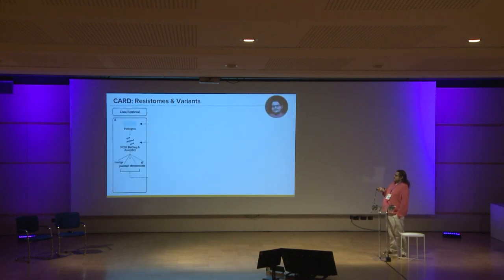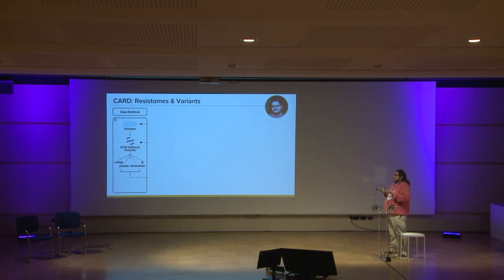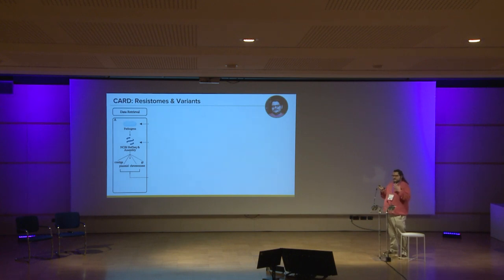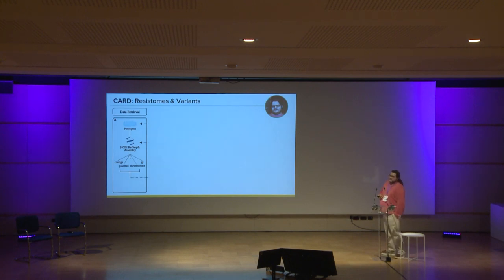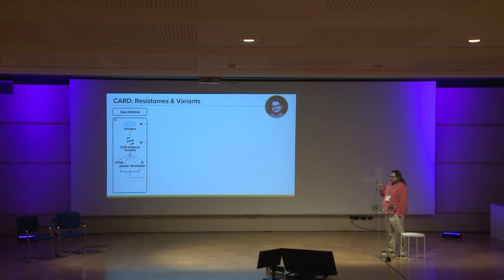The next thing we started doing — when I came along, about seven years ago — was using RGI to scale up our analysis and get closer to predicting resistomes. Instead of predicting resistance for a single isolate, we look at a pathogen as a whole and use multiple isolates to build a species-wide resistome, generated in silico. When this started, we began with 18 pathogens, and in our most recent release we're at about 377 pathogens. For each pathogen, we go to RefSeq and the assembly databases and download all publicly available isolates.